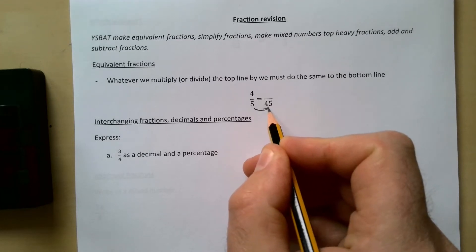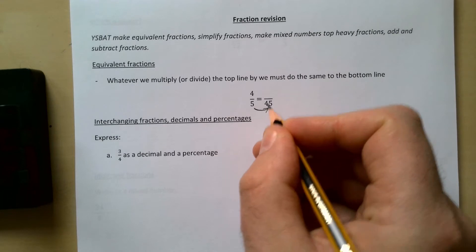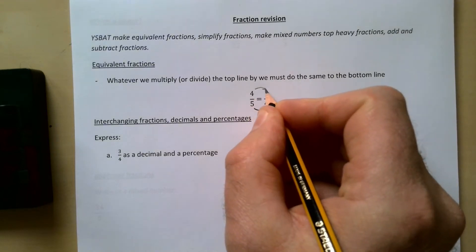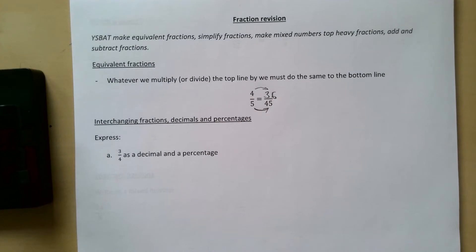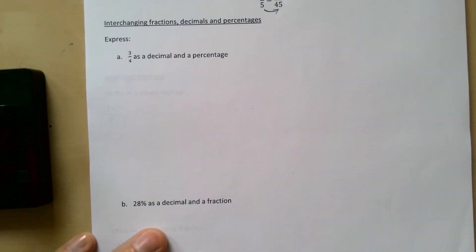And what do I do to the 5 to get 45? I'm timesing up by 9, so I do the same to this. I'm going to times this by 9 and that would give me the 36 over 45. Three quarters as a decimal and a percentage.